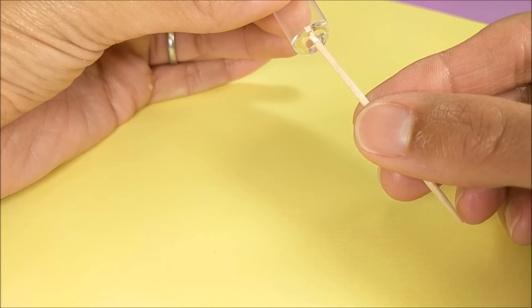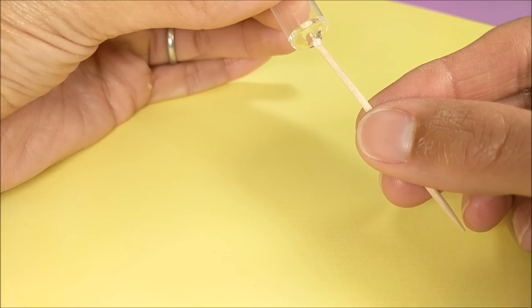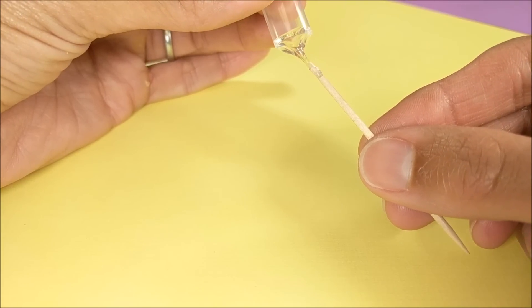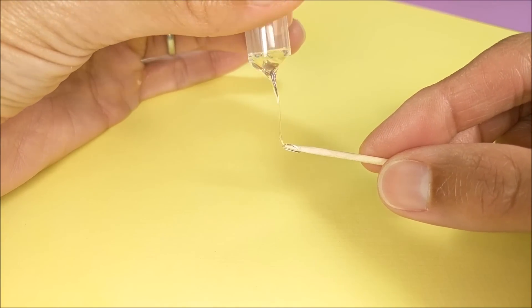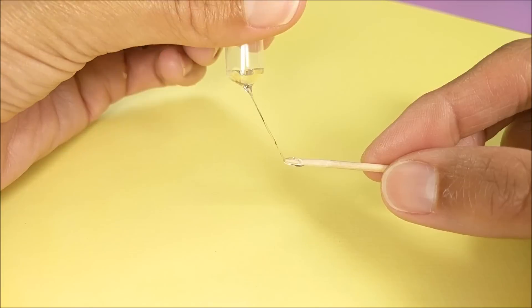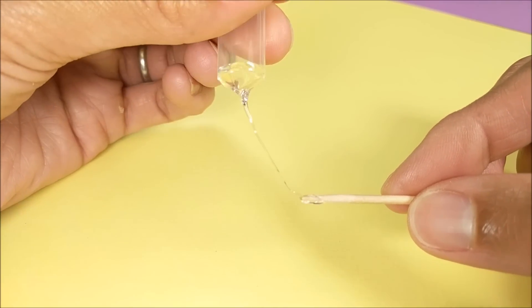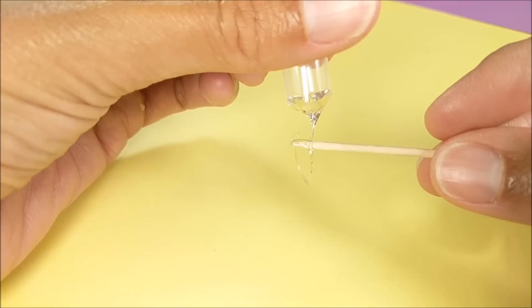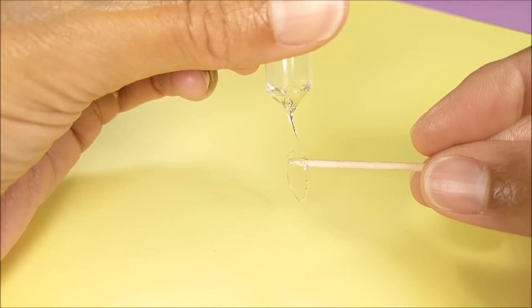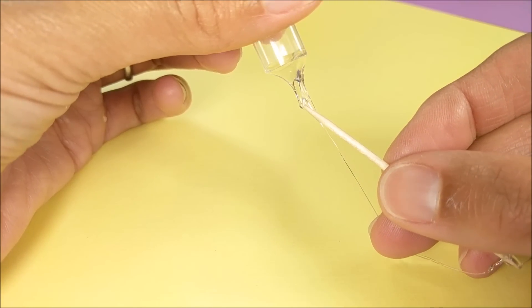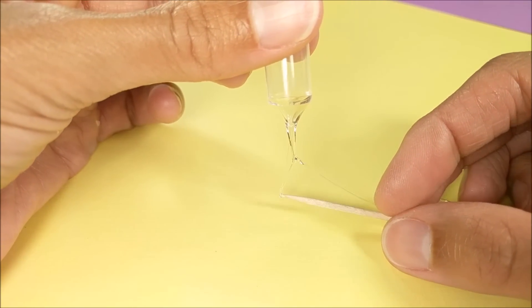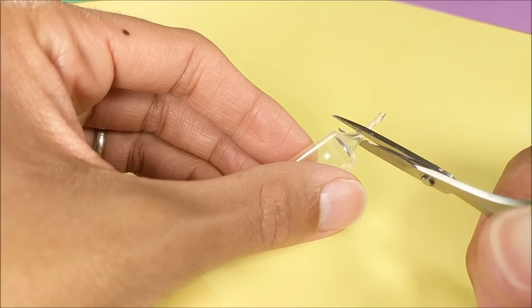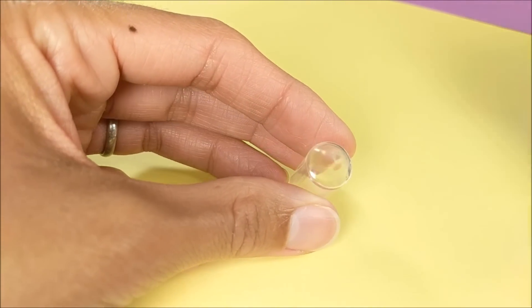Then I can use a toothpick or something to pull the hot glue from the center down, and then I just move it around to make sure that it dries in the center. It may take about a minute for the hot glue to dry. Then I cut off the tip revealing a hole in the middle.